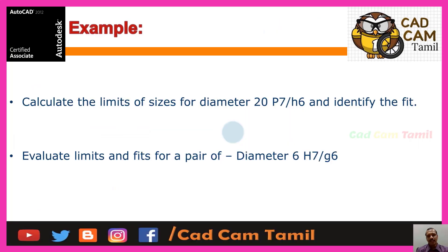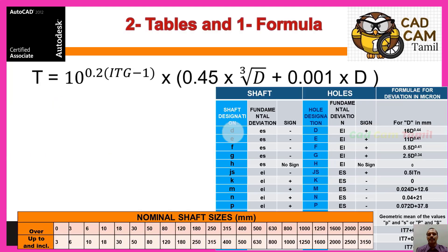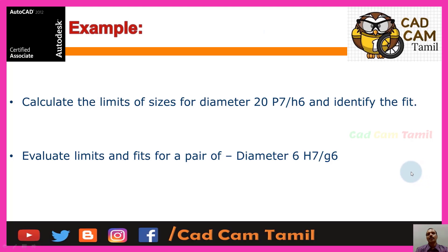Calculate the limits of sizes for diameter 20 P7H6 and identify the fits. Second question: evaluate limits and fits for a pair diameter 6 H7G6 using the table. Use the diameter range table, the formula, and the fundamental deviations formula to solve both problems.